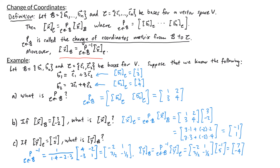So that's it for this video. In our next video we'll look at how to change between b-coordinates and c-coordinates when we don't know the relationships between the b vectors and the c vectors.